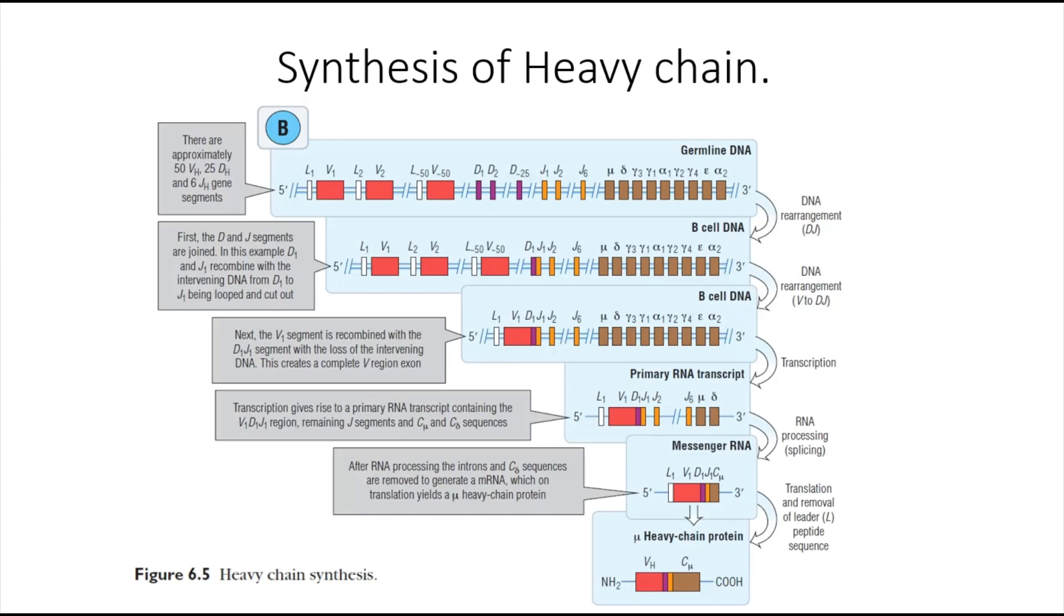Then RNA splicing or processing takes place, splicing out introns and keeping the exons, bringing them together. This also involves cutting out a specific constant region and keeping another.